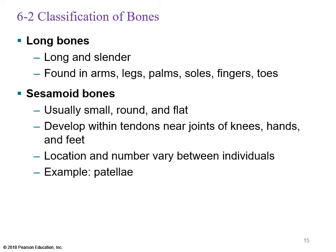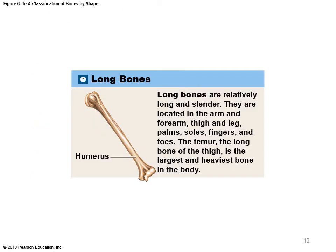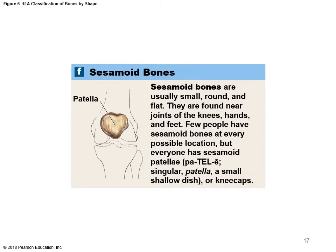Sesamoid bones are usually small, round, and flat, developing within tendons of the knees, hands, or feet. Their location and number vary between individuals; the most common is the patella. Long bones like the femur — the largest and heaviest bone — have a relatively long shaft. The humerus in the upper arm is shown here as an example. Sesamoid bones, like the patella, are found embedded within tendons.